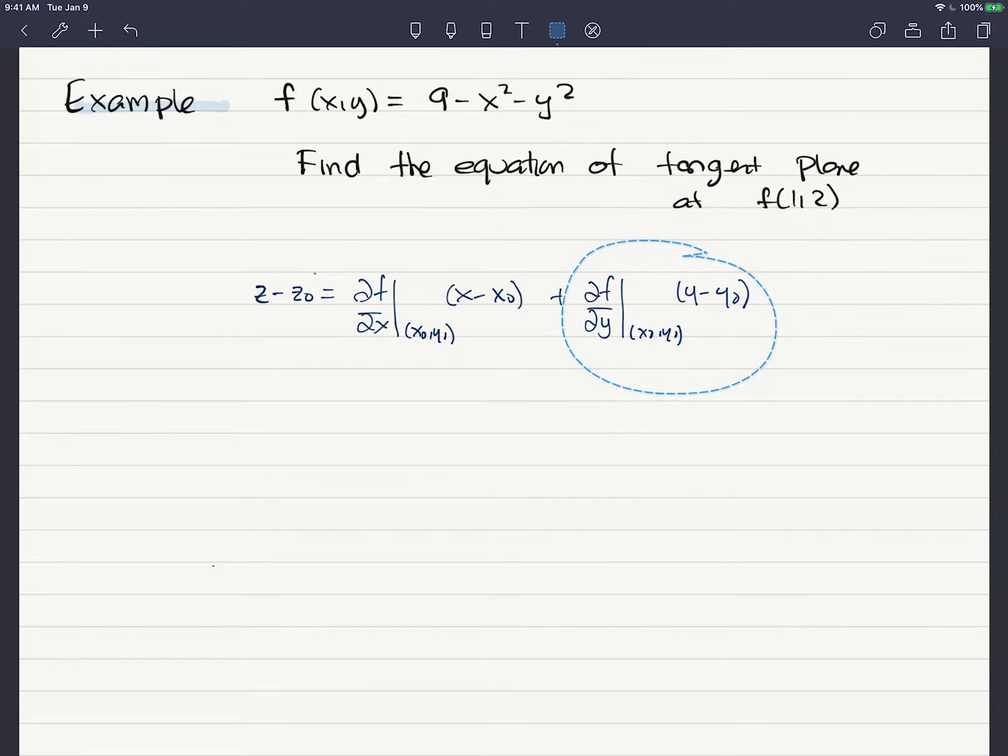So this is the equation of a line, right? y minus y₀ equals m times x minus x₀. This is the slope. And what this is doing, this is finding the tangent line.